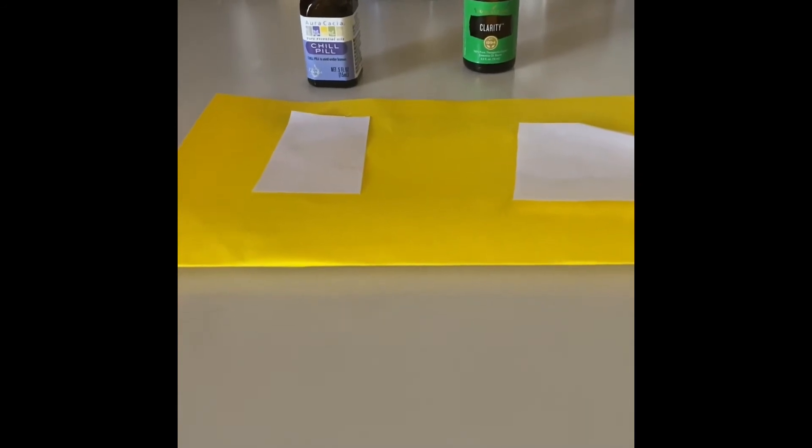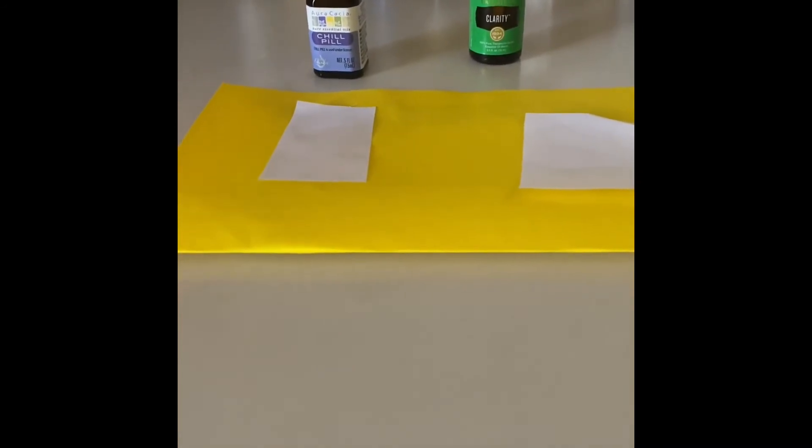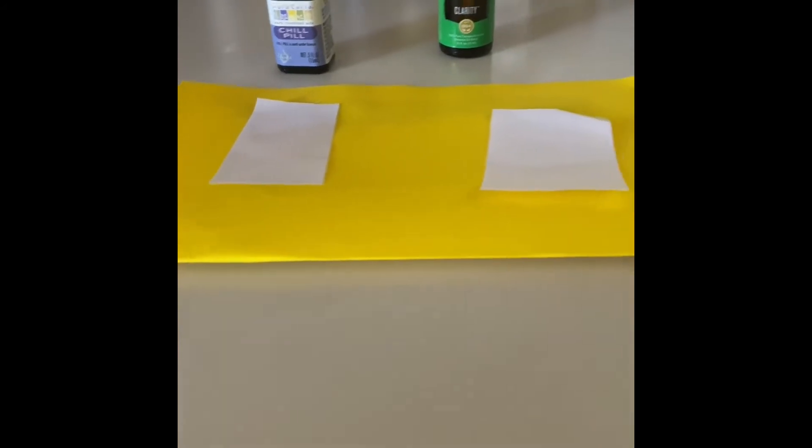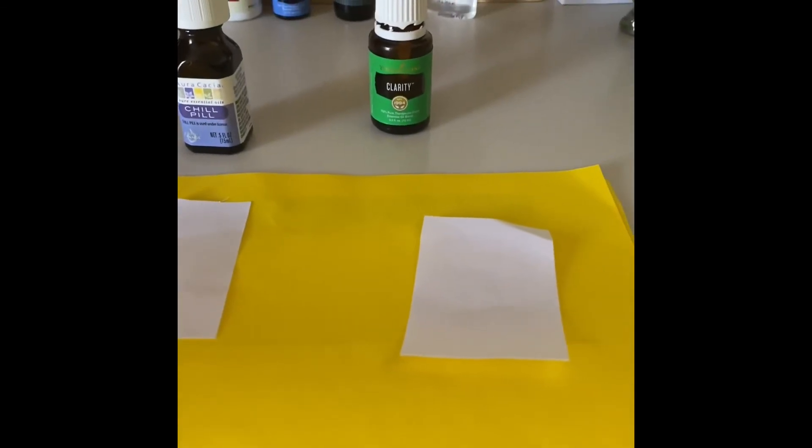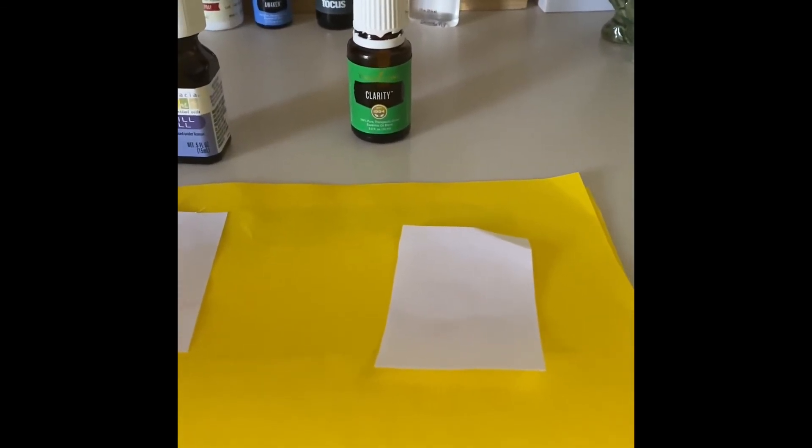Let's take a closer look to see which of these oils are in fact pure. I'm going to start with the Clarity one through Young Living. This is the paper that I dropped the essential oil on, and as you can see, there's no ring left on the paper. That tells us that this particular essential oil is in fact pure.